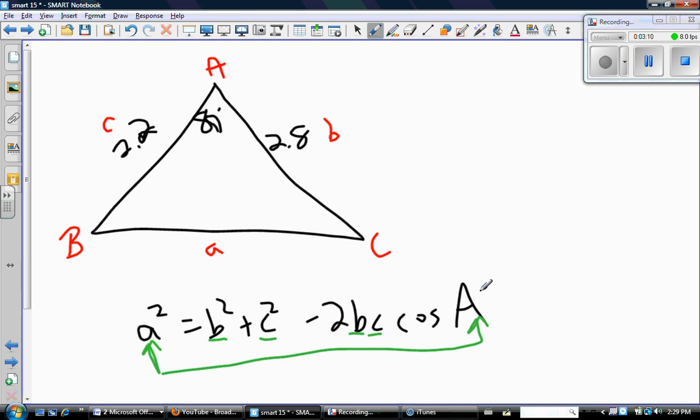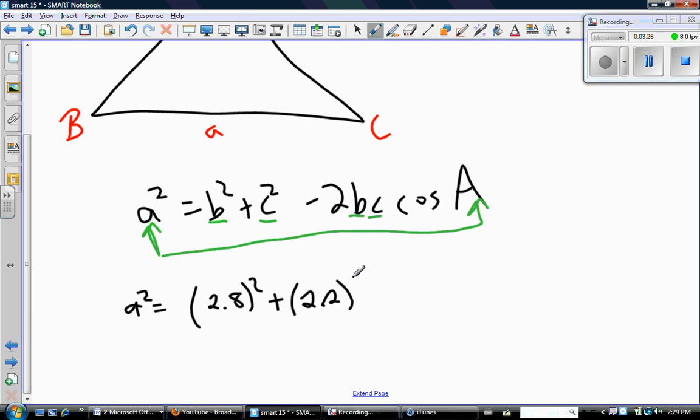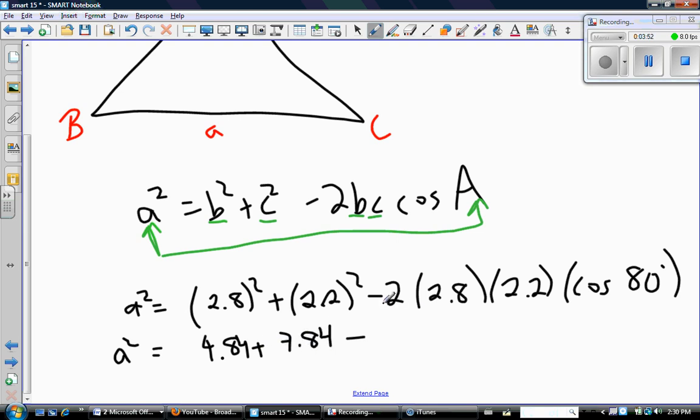So let's go ahead and do the math. Okay, so a squared equals b squared plus c squared minus 2bc cosine A. All right, so obviously make sure your calculator is in degree mode, and then just start doing the math. So let's see, 2.8 squared is 4.84, plus 7.84, 2.2 squared minus, so I'm going to multiply all these guys together, so that would give me 12.32.